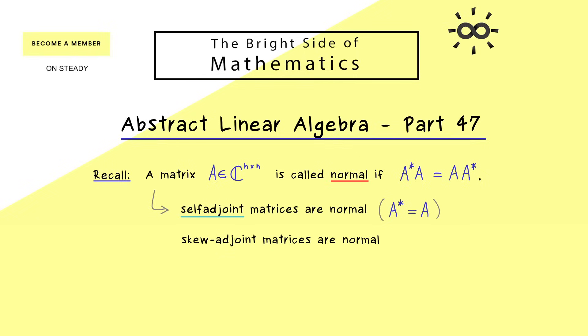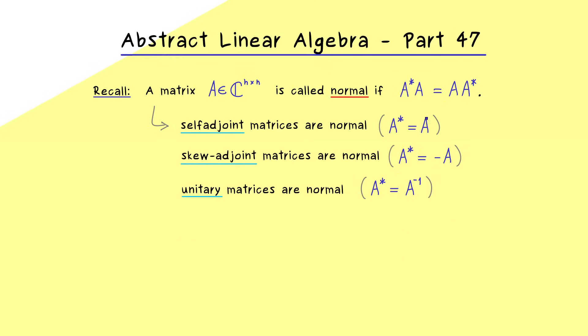Moreover in a similar way skew-adjoint matrices are also normal. This is also easy to see because there is only a sign involved. And finally the last important case of normal matrices you should remember are unitary matrices. These matrices are always invertible and the adjoint is actually given by the inverse. Therefore also in this case we see that the normal property is satisfied.